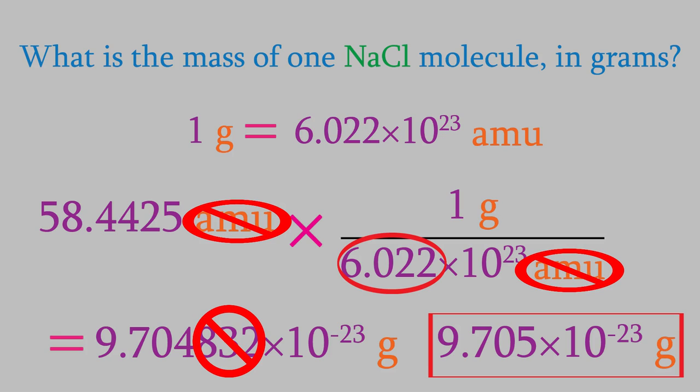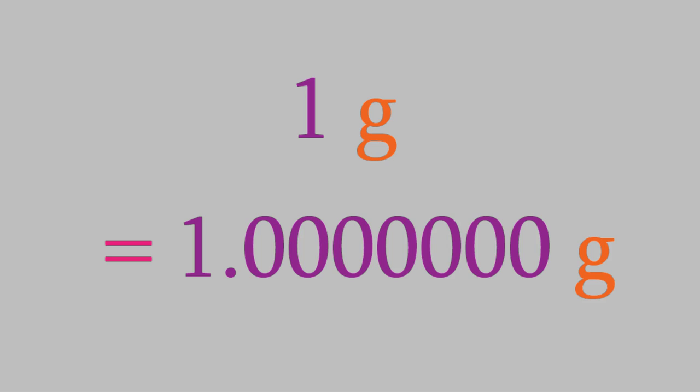So the answer is 9.705 times 10 to the minus 23rd grams. You might be wondering why there are 4 significant figures instead of just 1. After all, the numerator of this fraction just has the number 1. The reason is that the numerator here is exactly 1 gram. In other words, it's 1.000000 and so on. It doesn't have just 1 significant figure, it has an infinite number of zeros after the decimal point. We don't write it that way because it's a pain to write dozens of zeros in a situation like this. But a general rule of thumb is, whenever you're multiplying or dividing something by an integer, you can assume the integer has an infinite number of zeros after the decimal. So you can ignore the integer when you're deciding how many significant figures to put in your answer.